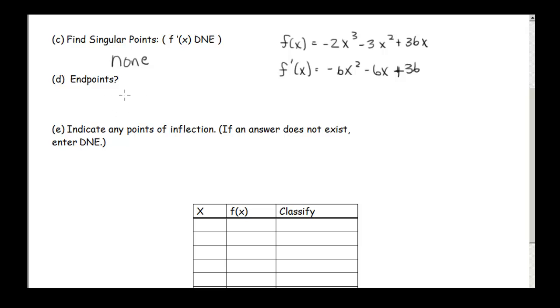And remember, we weren't given an interval on which our function was defined. So there are no endpoints. Usually we would see something like from negative 2 to 5 or something like that. And then your endpoints would be negative 2 and 5. But that isn't the case with this one.